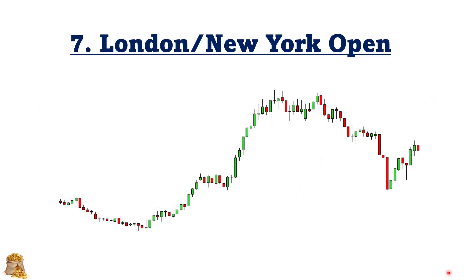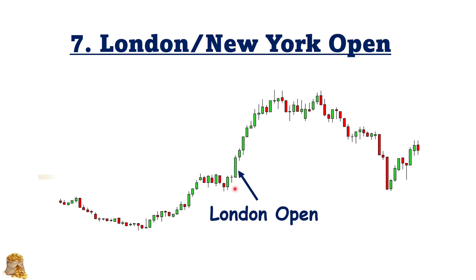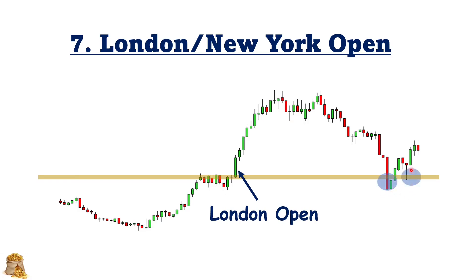Sometimes the market open can also serve as support and resistance levels, especially the London and New York open. Here's the London open bar, and if we draw a horizontal level, we can see that the market later goes back to test these levels two times.